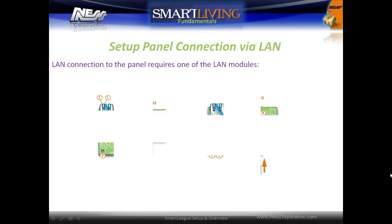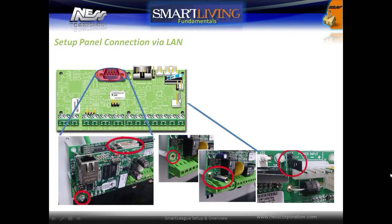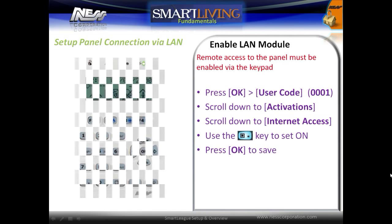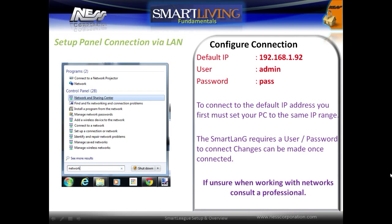To connect via LAN, the panel requires a SmartLAN module. These are installed on the main board by removing the bottom left-hand screw and installing the screw post. Fit the LAN board to the RS-232 port and install the screw through the LAN board. Set jumper J16 to the 1 position to power up the module. Access to the panel via the LAN module must be enabled in the user programming of the keypad. Press OK followed by a user code, scroll down to Activations, then scroll down to the option Internet Access. Use the Check On button to set this option on and press OK to save. The SmartLAN G module requires a username and password to connect; changes can be made once connected. If you are unsure about working with network connections, consult a professional to assist.